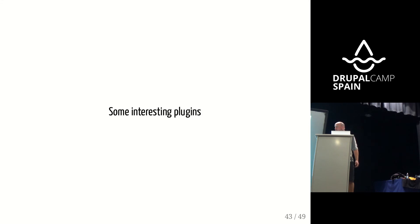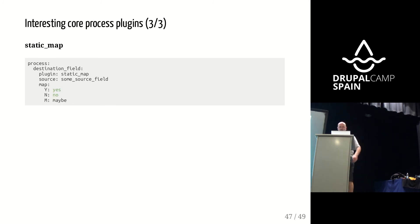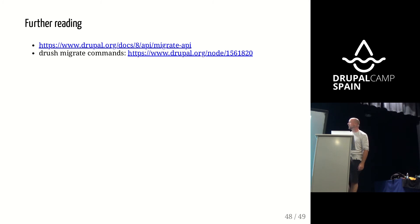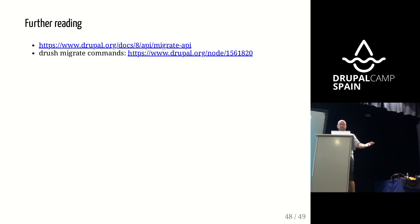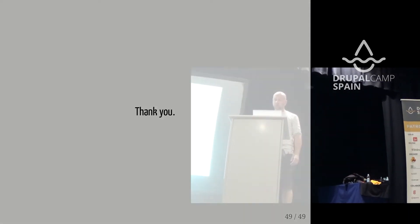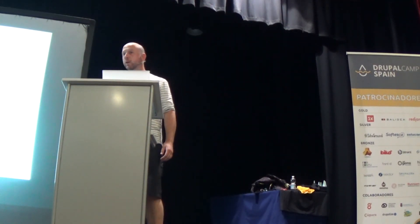That's the end. For people who want to download, there's a bit more about some interesting process plugins and what you can do with the process section. There are some interesting links — the Migrate API link has kind of everything I talked about. And there are interesting Drush migrate commands to do more specific things, like only migrate a subset, migrate with a bunch of other options. I'm sorry for the last 10 minutes being really fast — I have to shorten my presentation for next time.